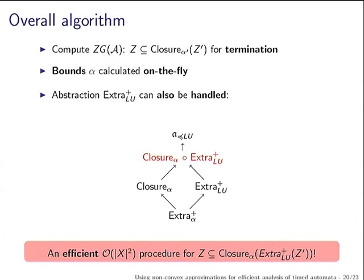Overall, we compute the zone graph and use efficient closure inclusion tests for termination, with an additional gain from calculating bound functions on the fly. We also managed to compose the closure abstraction with the existing best abstraction used in current implementations to get one that subsumes both, with an efficient test for this composed abstraction. So we have a non-convex abstraction that subsumes all those used in practice, with bounds calculated on the fly.